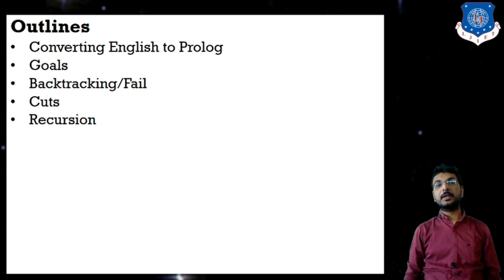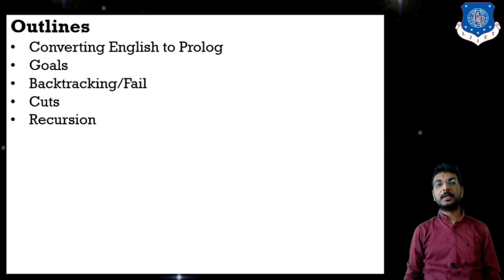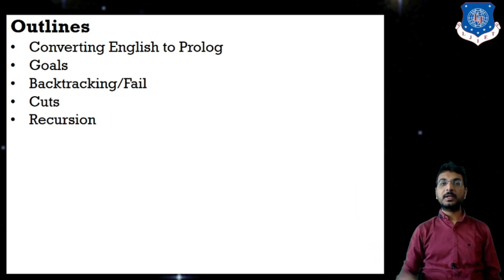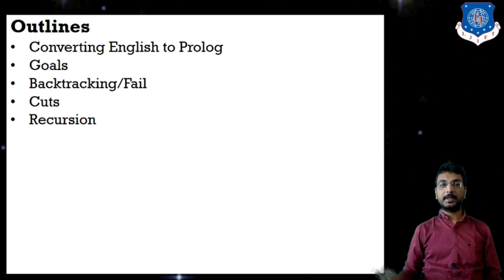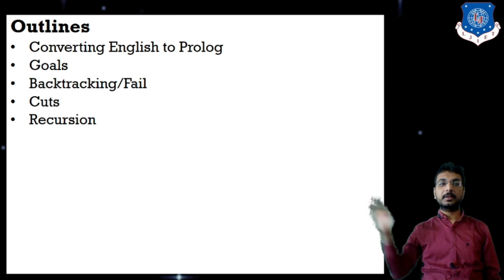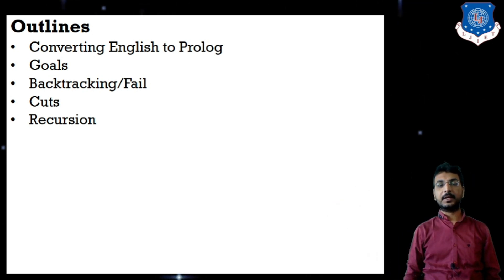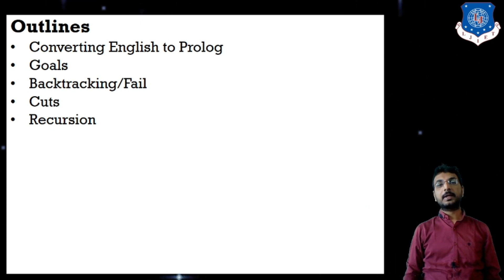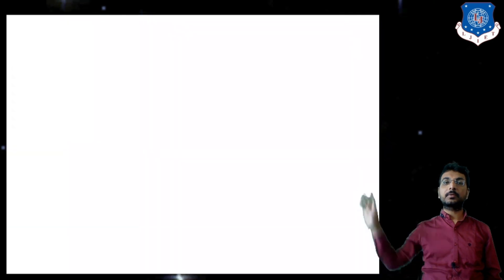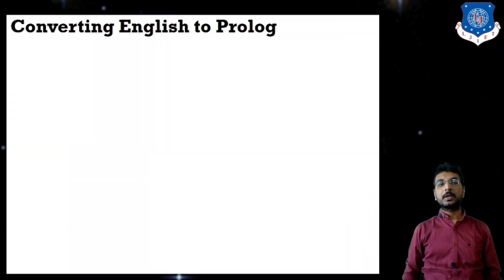The contents we are going to study: first is converting English language to Prolog language — that means if we are provided some sentence, that English language will be converted to a Prolog language statement, a predicate. Next is goals, then backtracking or the fail predicate, then cut predicate, and last is recursion.